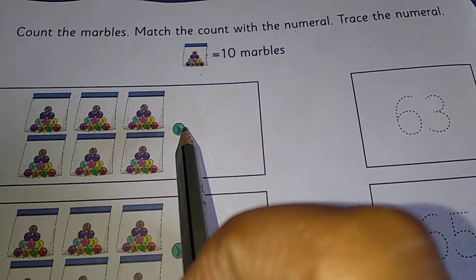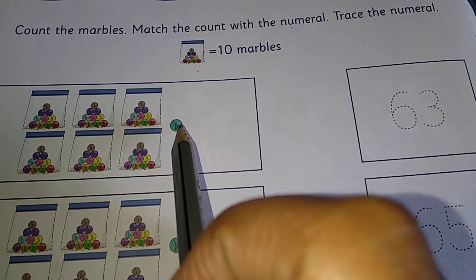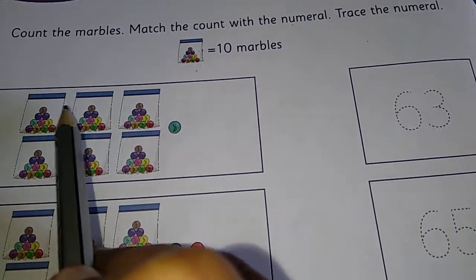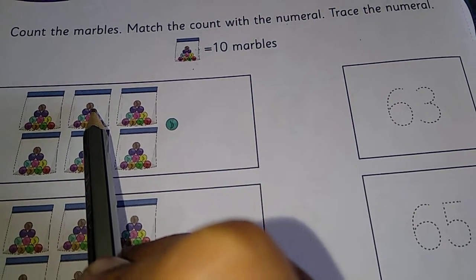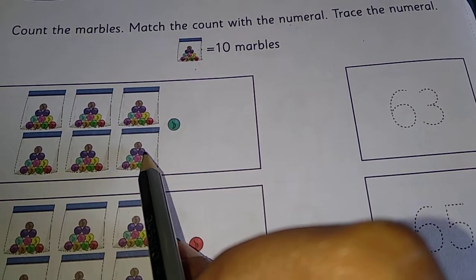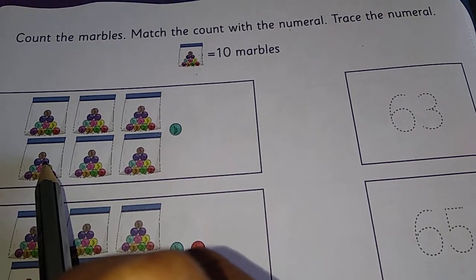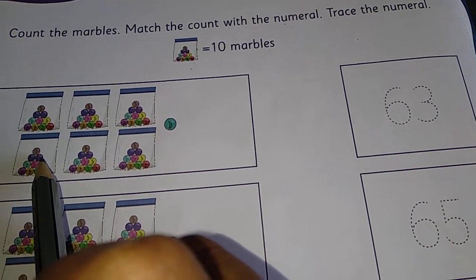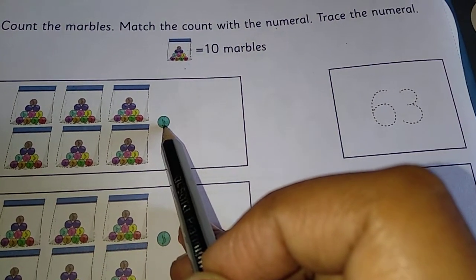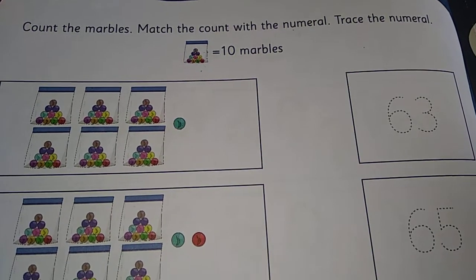Six packets — we know that in each packet there are ten marbles. So ten plus ten is twenty, twenty plus ten is thirty, thirty plus ten is forty, forty plus ten is fifty, fifty plus ten is sixty. Sixty plus one is sixty-one. So in the first box there are totally sixty-one marbles.